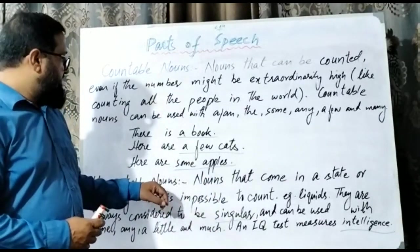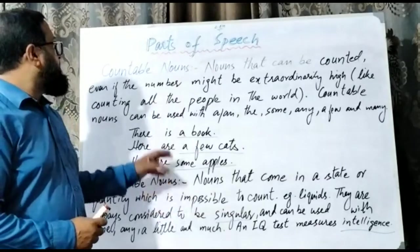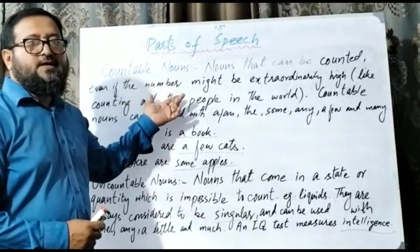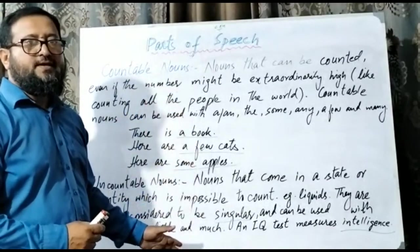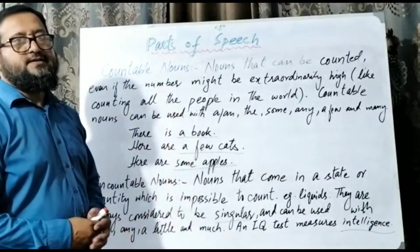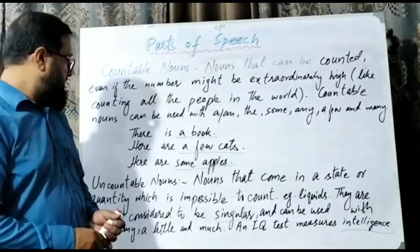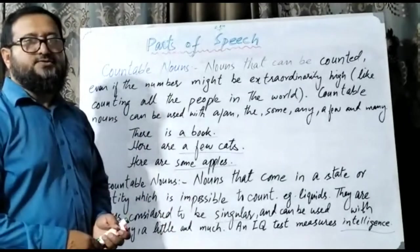Uncountable nouns are a bit different from countable nouns. The basic difference is: things that can be counted versus things that cannot be counted. Let's look at some examples of countable and uncountable nouns.